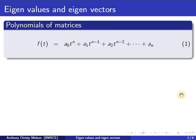To begin with, if we consider a polynomial given by equation 1, the polynomials of matrices can be constructed on square matrix A, which is given by F of A, where T is replaced by the square matrix A.